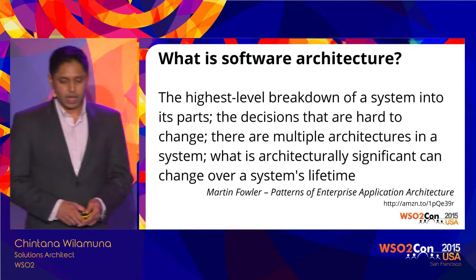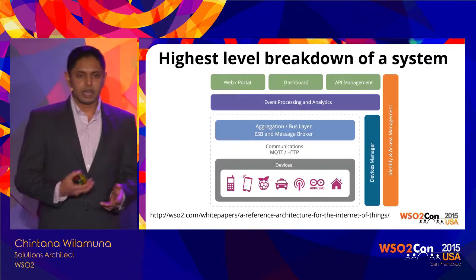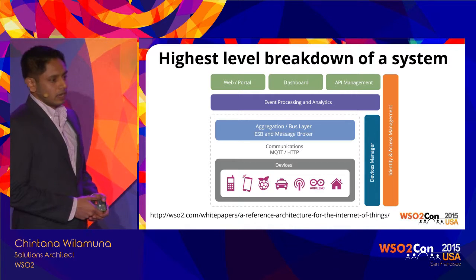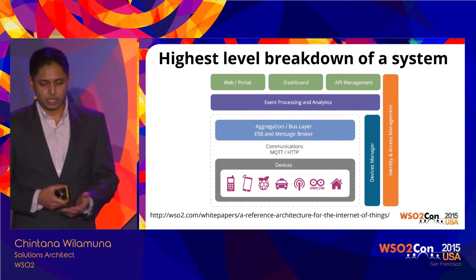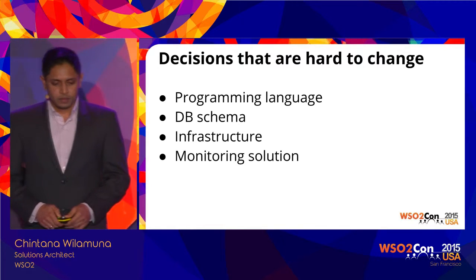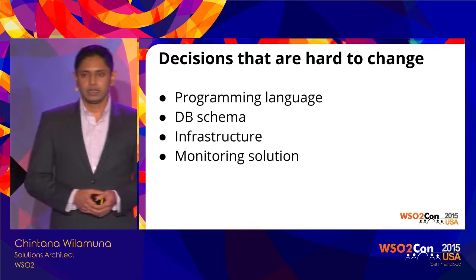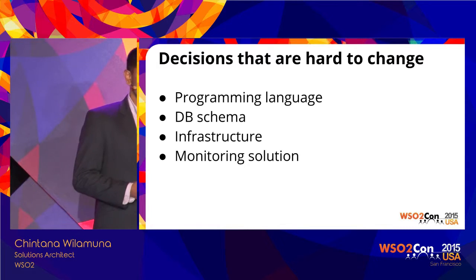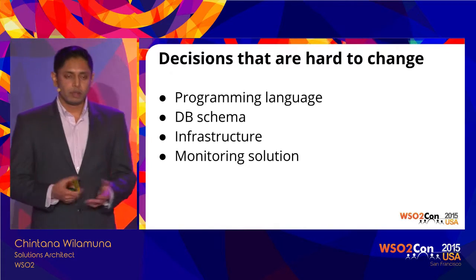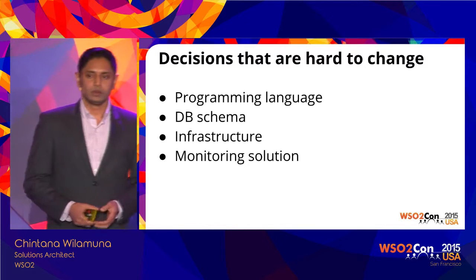What's architecturally significant can change over time. The highest level breakdown can look something like the WSO2 reference architecture for IoT — with a portal, dashboard, API management, VPN processing, and so on. Decisions that are hard to change include your programming language choice, your DB schema, infrastructure, and monitoring solution. If your team is Java developers, it's very hard to adapt to a new programming language.